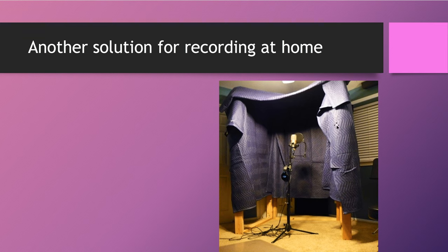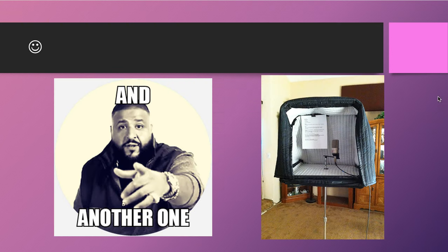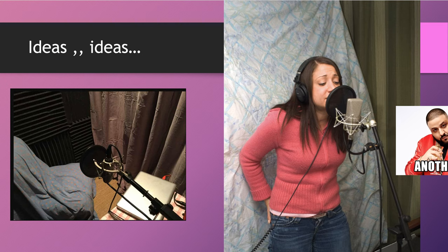Here is another solution for recording at home: blankets. You hang them around you so your signal doesn't bounce around too much — you get a cleaner signal. And look at this option, it's about 20 dollars — you just put the microphone inside and get a clean sound. Your vocal is not going to bounce around the walls. Walls are bad, ladies — walls are really bad for your recording. These other options are also super cheap, around 20 to 30 dollars, and you can find used ones on eBay.